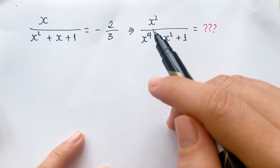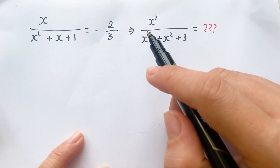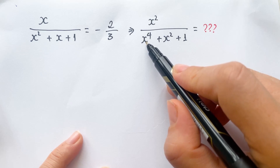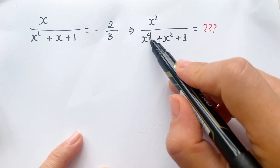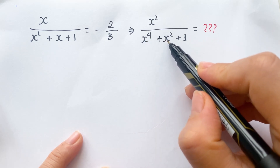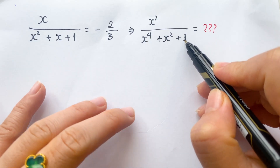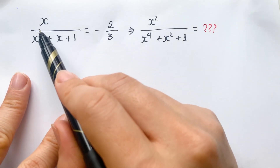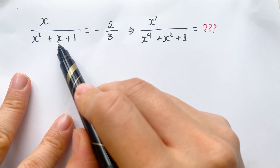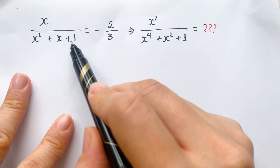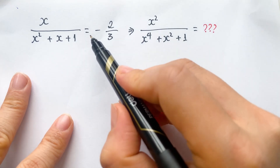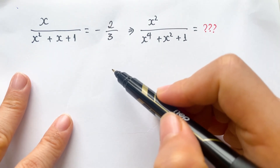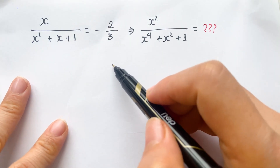Hello. How to calculate the expression x squared over x to the power 4 plus x squared plus 1, when you know that x over x squared plus x plus 1 equals minus 2 thirds.